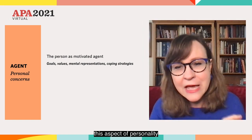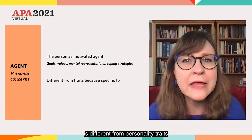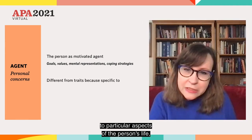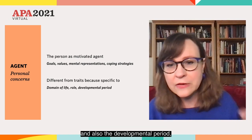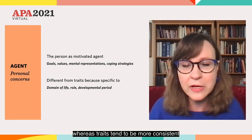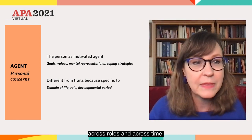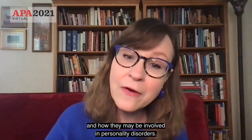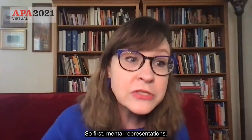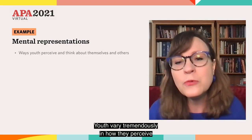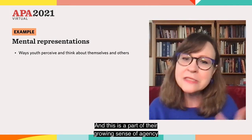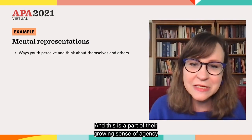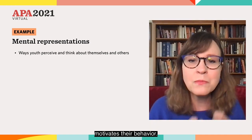These personal concerns — this aspect of personality — is different from personality traits because it's specific to particular aspects of the person's life, depending on the domain, the role the person is in, and also the developmental period, whereas traits tend to be more consistent across roles and across time. I'm going to give you two examples of these personal concerns and how they may be involved in personality disorders. So first, mental representations. Youth vary tremendously in how they perceive and think about themselves and other people, and this motivates their behavior.